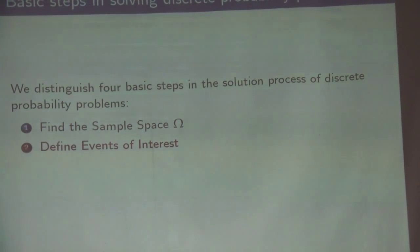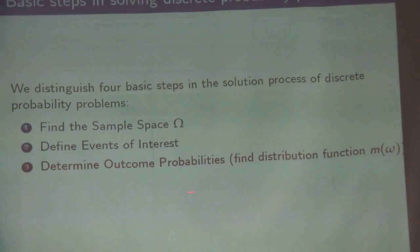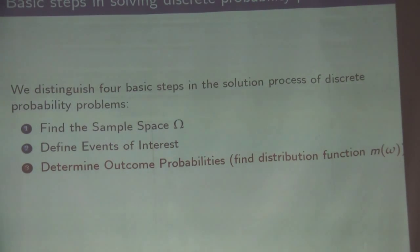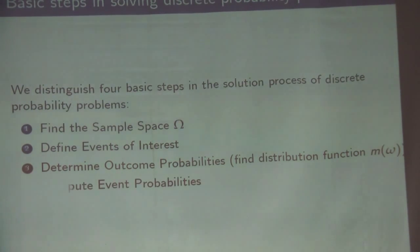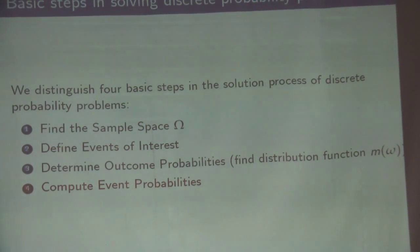There are four basic steps in solving a probability problem: first, find the sample space; second, define the events of interest; third, determine outcome probabilities — that is, find the distribution function; and fourth, compute the event probabilities. These are the four steps for solving any probability problem.